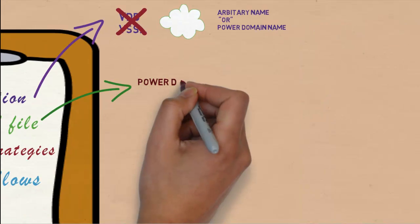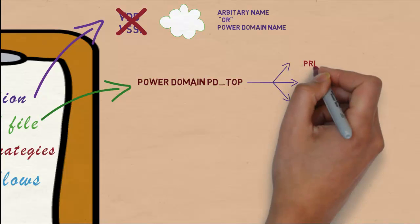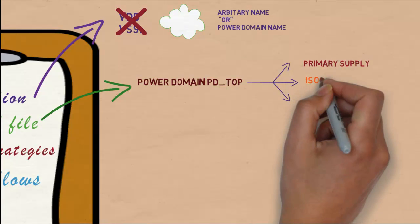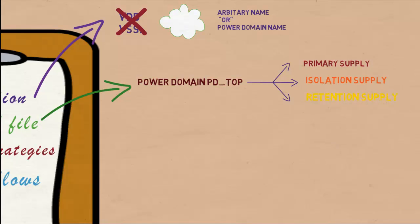In supply set UPF, when we create a power domain, three handles representing the primary supply, isolation supply and retention supply are automatically created.